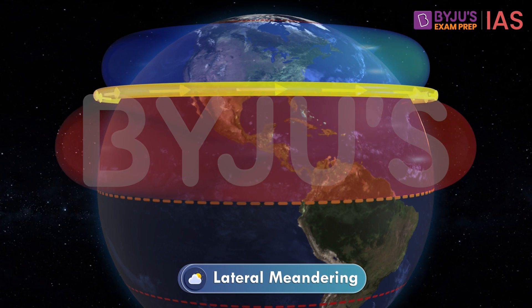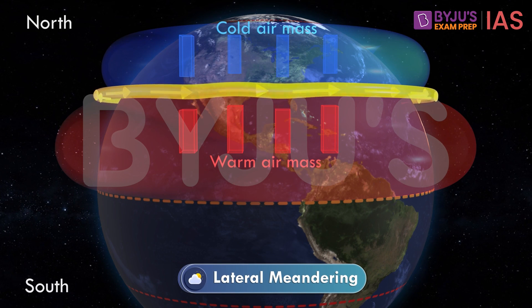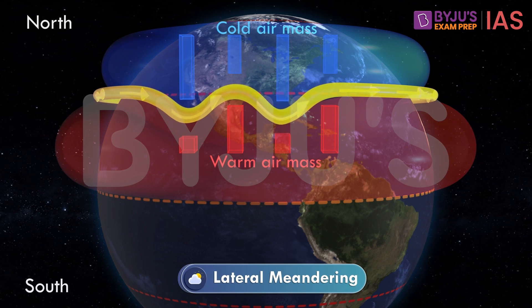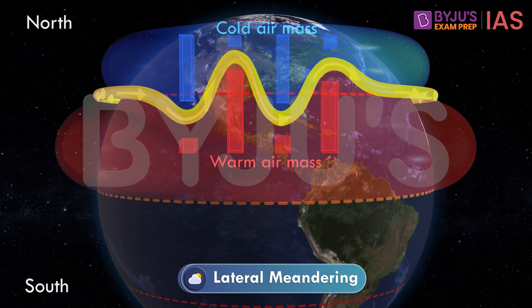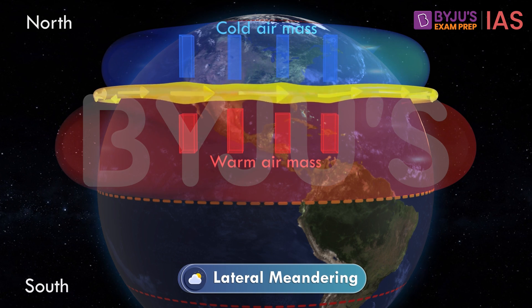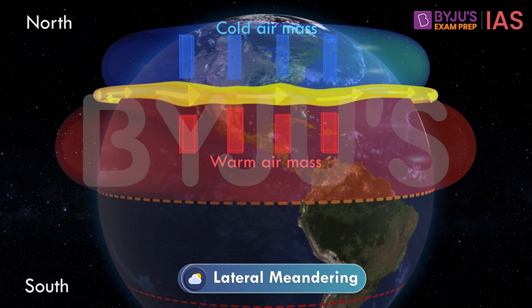Why do jet streams meander? Let's start with lateral meandering. Jet streams are formed at the junction of two contrasting air masses. Suppose there is a cold air mass coming from the north and a warm air mass coming from the south. At some places the cold air mass approaches the warm air mass at a much faster rate, while at other places it is the warm air mass which rushes towards the cold air mass faster. This non-uniform interaction of air masses at various points leads to meandering in the lateral direction.